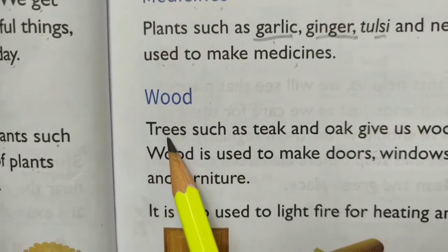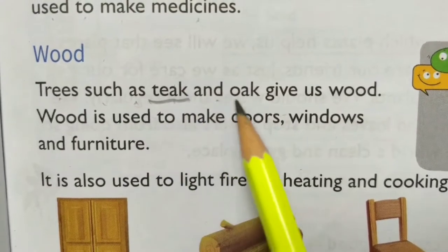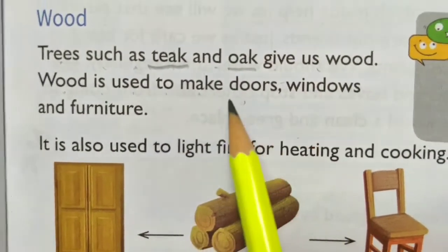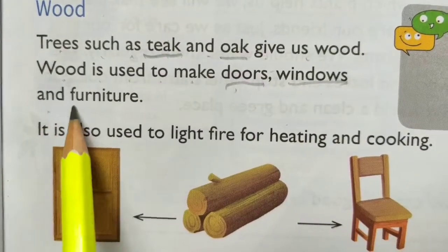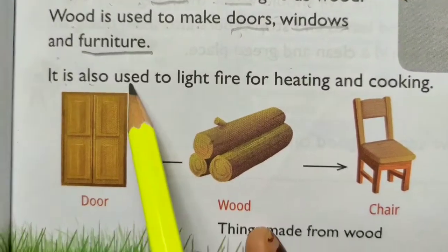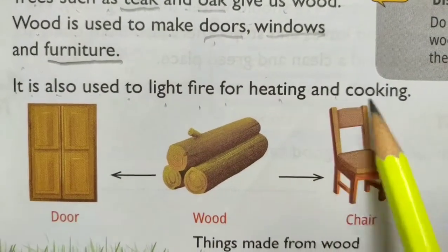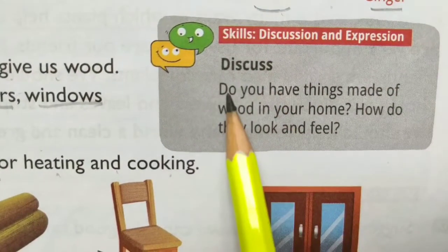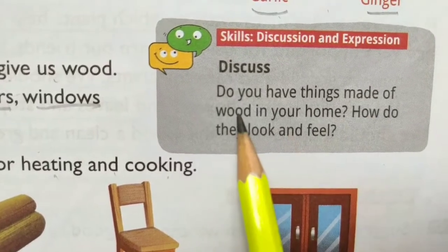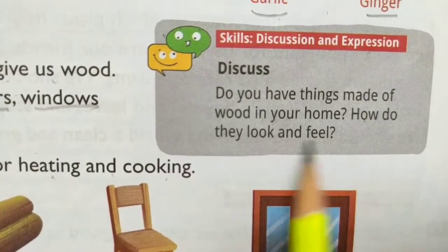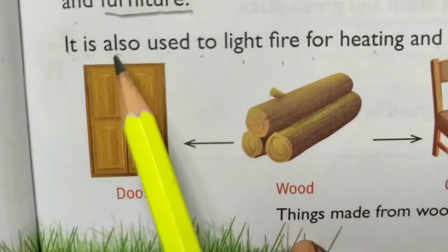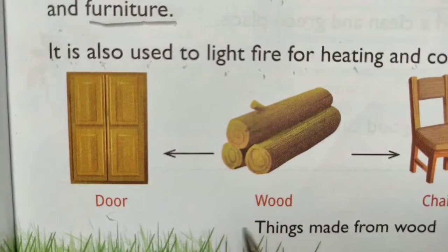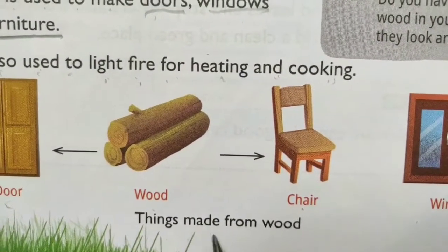Wood. Trees such as teak and oak give us wood. Wood is used to make doors, windows and furniture. It is also used to light fire for heating and cooking. Skills — Discussion and Expression: Do you have things made of wood in your home? How do they look and feel? Door, wood, chair — things made from wood.